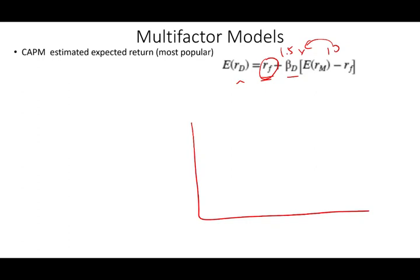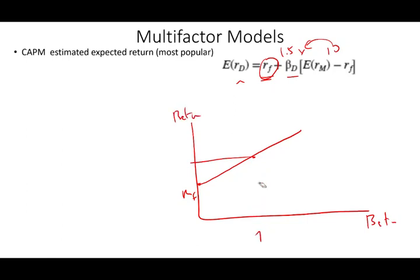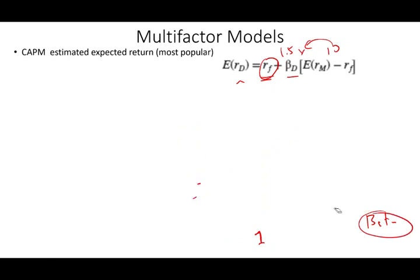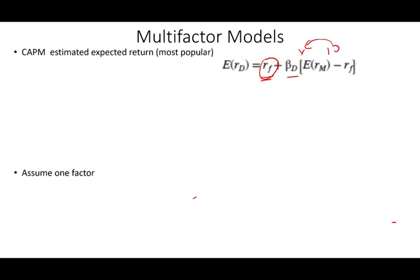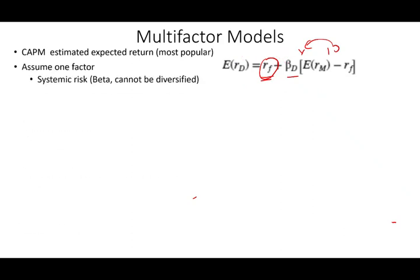When we draw CAPM visually, the risk-free rate is on the y-axis, and the market portfolio corresponds to a beta of one. Your expected return is a function of your beta — basically one factor. So if your beta changes to two, your expected return will change accordingly. It's assuming only one factor, and that factor — beta — is called systematic risk. It's the risk that we cannot diversify.